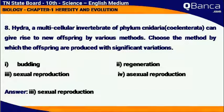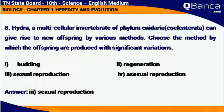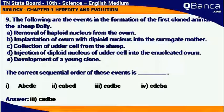Hydra, a multicellular invertebrate of phylum Cnidaria (Coelenterata), can give rise to new offspring by various methods. Choose the method by which the offspring are produced with significant variation. Answer: sexual reproduction.